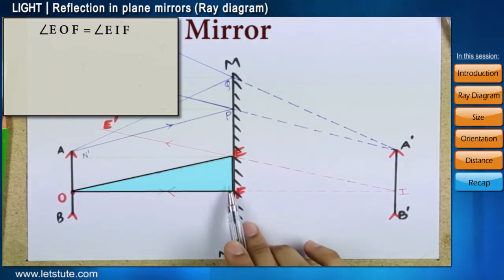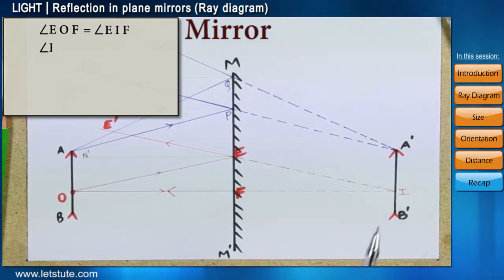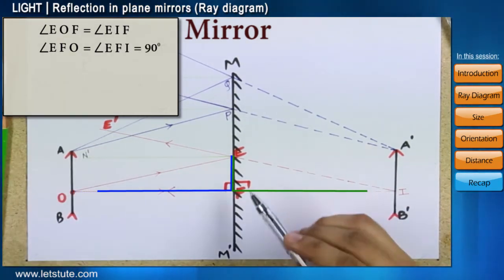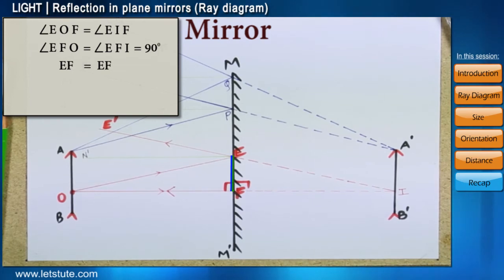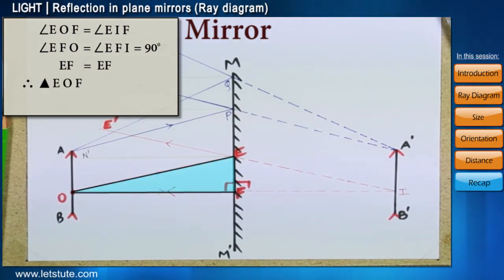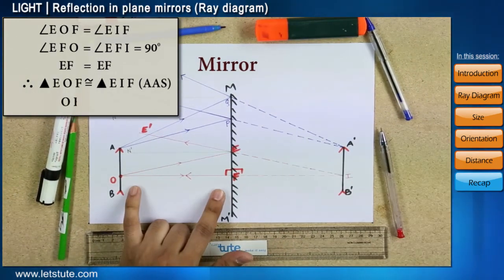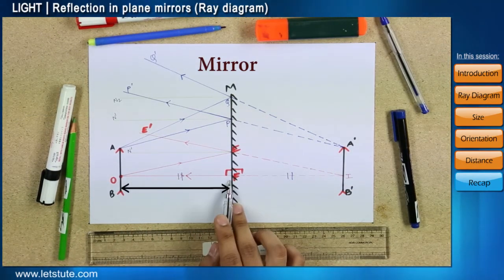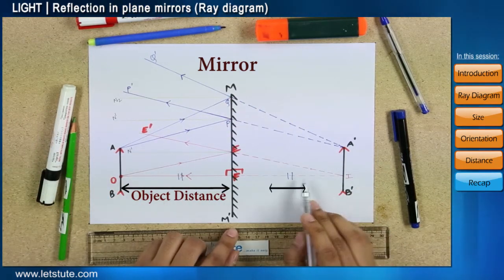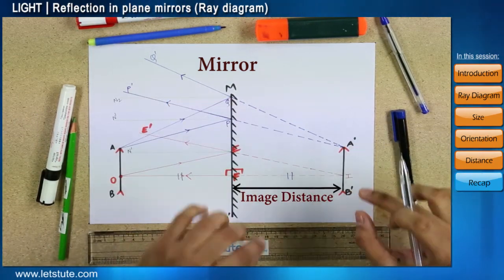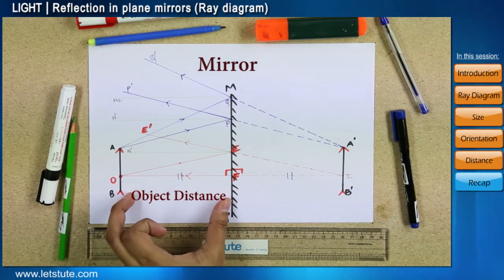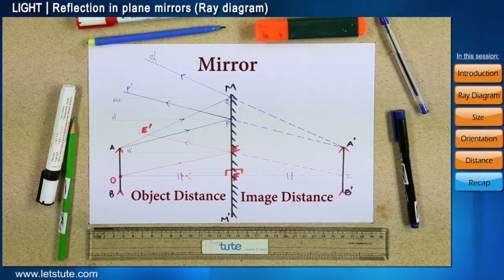Now, let's consider the triangles EOF and EIF. Angle EFO is equal to angle EFI as both are 90 degrees. Therefore, EF is the common side. Therefore, triangles EOF and EIF are congruent. So, length OF is equal to length IF. But in the figure, OF is the distance of the object from the mirror and IF is the distance of the image from the mirror. So, from this, we have just proved that the object to mirror distance is always equal to the image to mirror distance in case of a plane mirror.